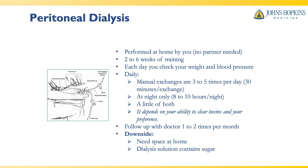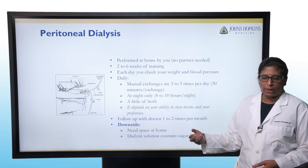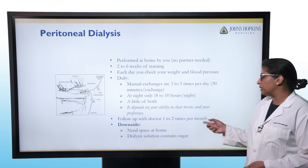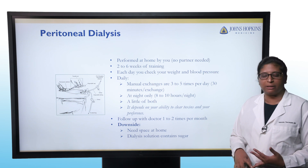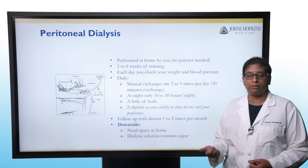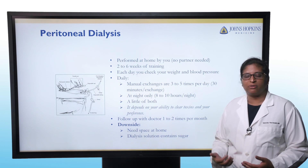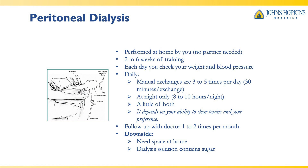Peritoneal dialysis is performed only at home. A partner is not required because there's no direct access to blood, so there's less risk of emergency. Training takes about two to six weeks. During training, you learn how to check your weight and blood pressure, determine which dialysate fluids to use, and perform exchanges — either manual exchanges about three to four times a day, or using a cycler machine that does the exchanges overnight. Sometimes people do a combination of both, individualized to what your body needs. Downsides include needing space at home for monthly supply shipments, an unstable home situation making it harder, and the fact that dialysate fluid has a high sugar content which can make diabetes harder to control.